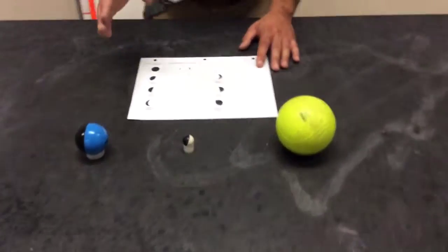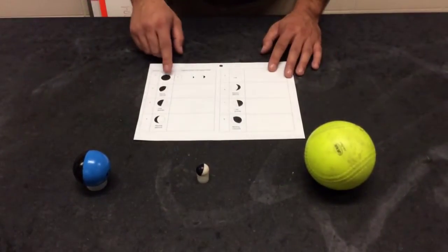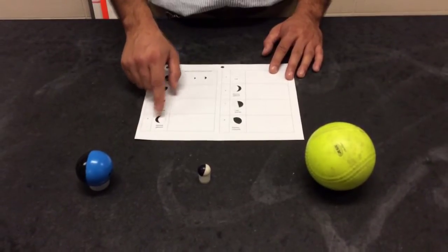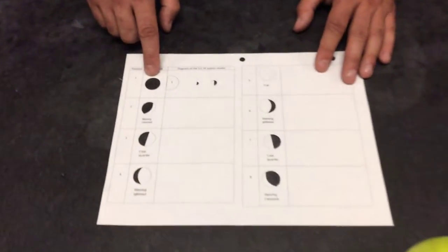So students are to try and find the arrangement of the earth, moon, and sun in order to create the moon in the order that we see it. The first one, known as the new moon, is a completely shaded out moon.